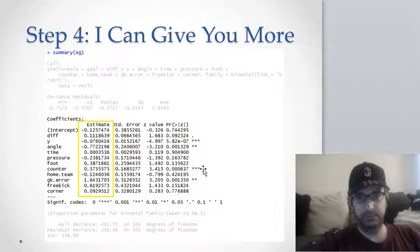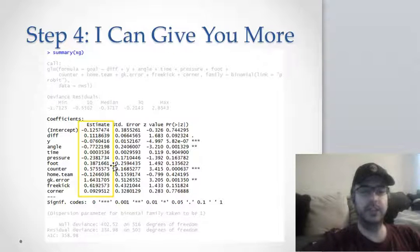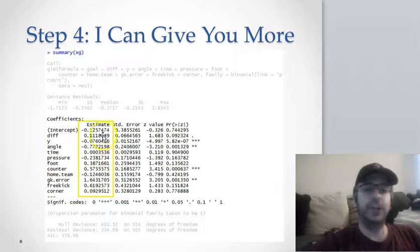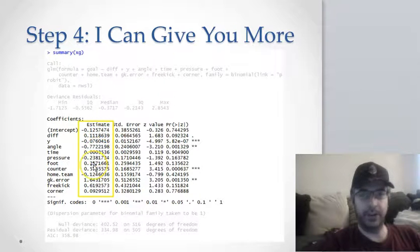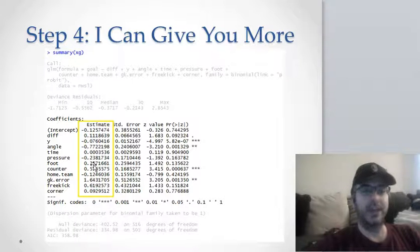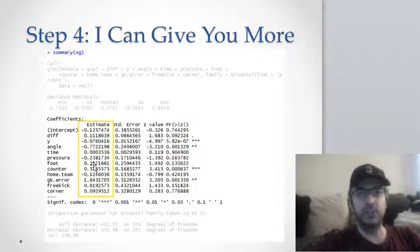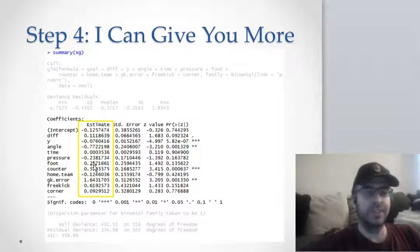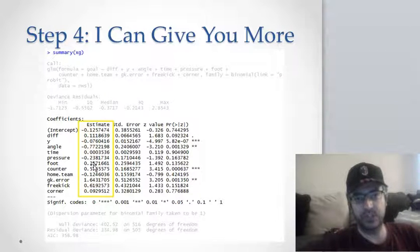Last one here, counterattack. Was the goal scored on a counterattack? There's stars. It's positive. So if the shot is taken as a result of a counterattack, as a fast-moving attack, it's more likely to score. Go through that for each of these variables. If this sort of doesn't make intuitive sense to you, like I said, go to my prediction model video for the NWSL. I explain it in a lot more detail there. I don't want to reiterate too much. But it's a good place to get a refresher to get maybe even a second viewing of this sort of thing.